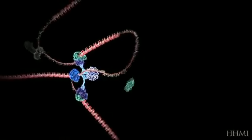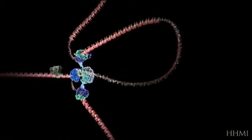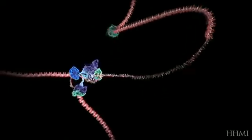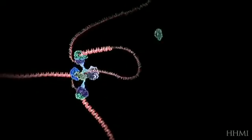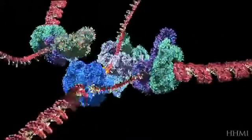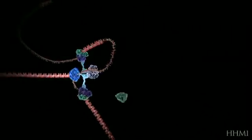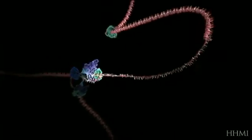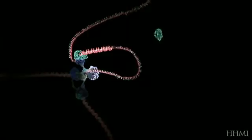Copying occurs at a localized region called the replication fork, which is a Y-shaped structure where new DNA strands are synthesized by a multi-enzyme complex. Here, the DNA to be copied enters the complex from the left. One new strand is leaving at the top of frame and the other new strand is leaving at the bottom.